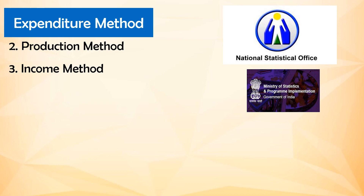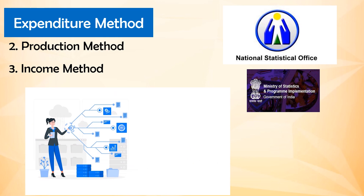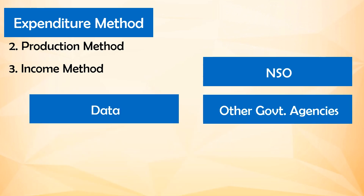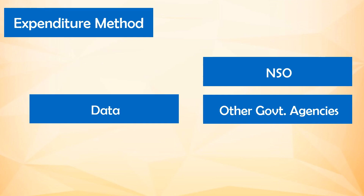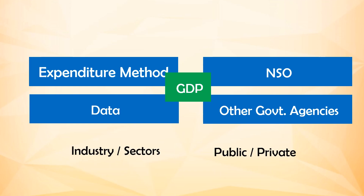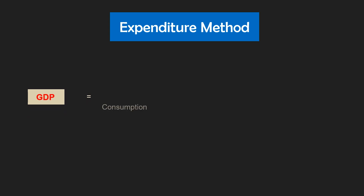These expenditure components are calculated based on data from various sources including surveys, government reports, and other statistical information. The NSO, along with other government departments and agencies, compiles and analyzes this data to determine the components, values, and their contribution to India's GDP. This approach breaks down the country's GDP into different components to understand and analyze the various drivers of economic activity. The formula used is: GDP equals private consumption plus gross fixed capital formation plus government expenditure plus net exports.